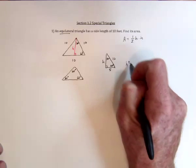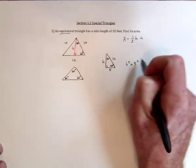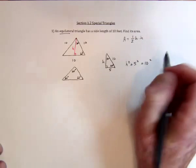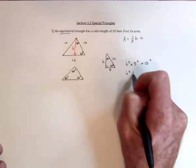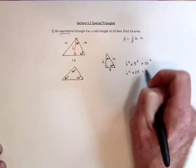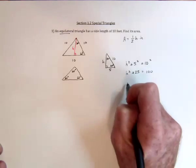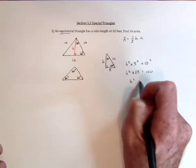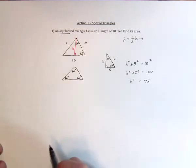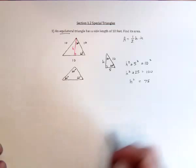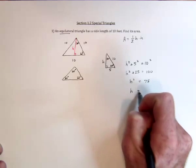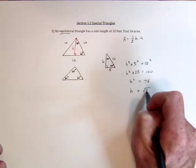And then we've got H squared plus 5 squared equals 10 squared. So it's going to be 25 and 100. Subtract 25 from both sides. And then take the square root. H is going to be the square root of 75.